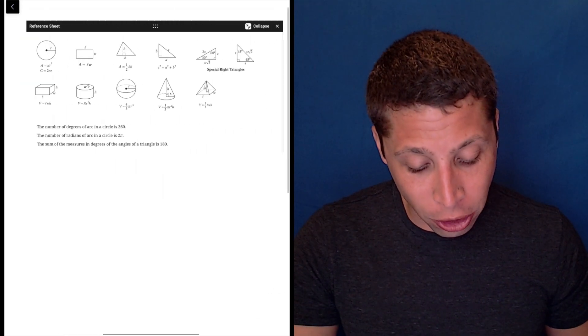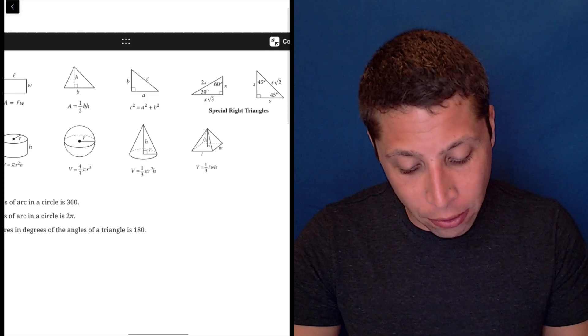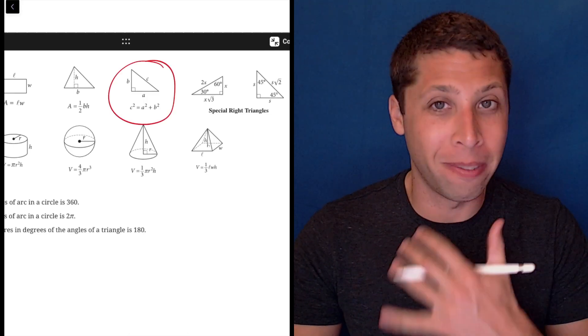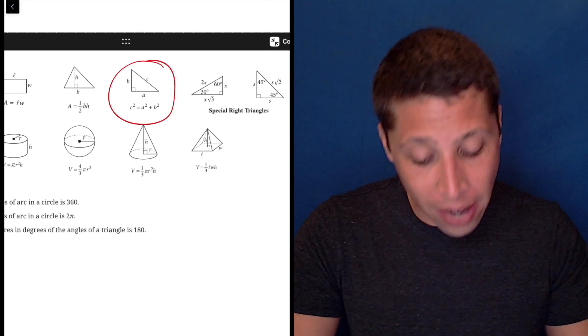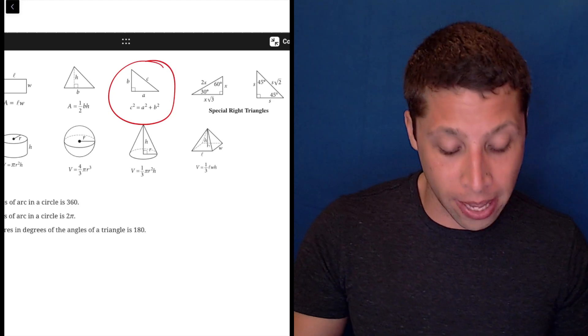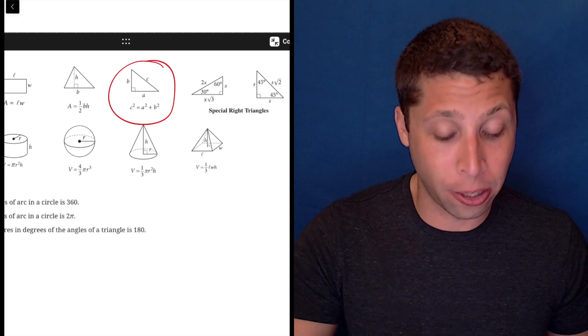If not, remember the reference chart gives you a bunch of formulas. It is given to you. It's one of the most popular formulas in math that you'll ever learn, so hopefully it's something you have memorized. But if not, it's right there, and it does remind us that the C part is the hypotenuse.